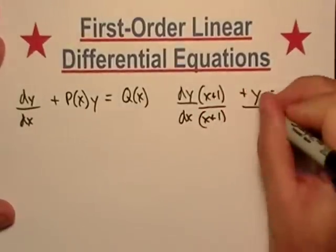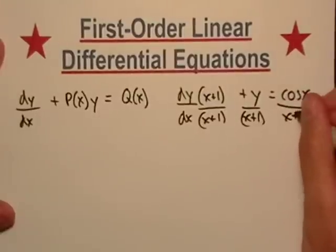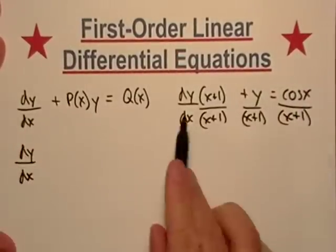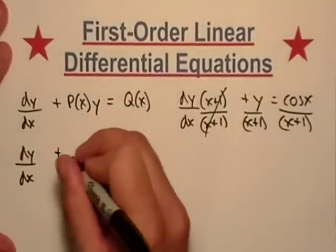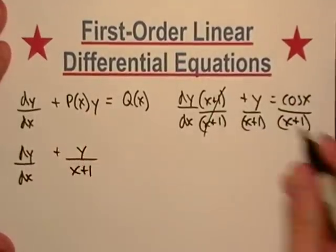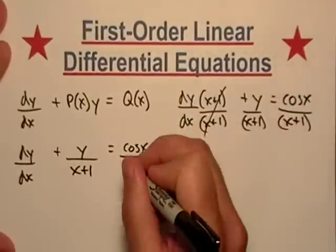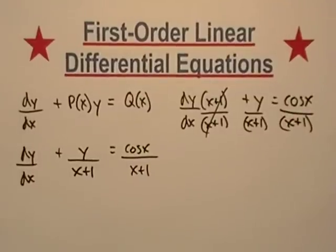We're just going to divide everything out. And those cancel out, so we get dy/dx plus y over x plus one, and that is equal to cosine x over x plus one. Not a problem.